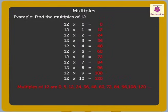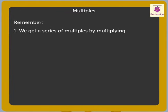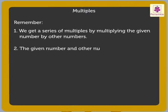Remember the following points while finding the multiples of a number. 1. We get a series of multiples by multiplying the given number by other numbers. 2. The given number and other number are the factors of the product we call a multiple.